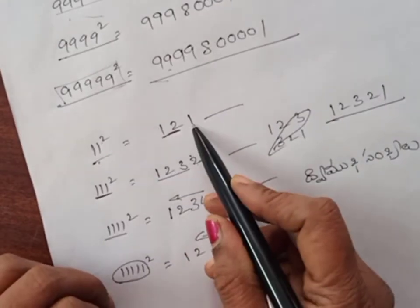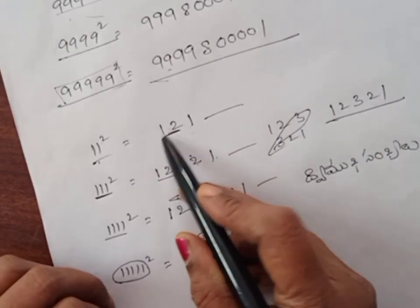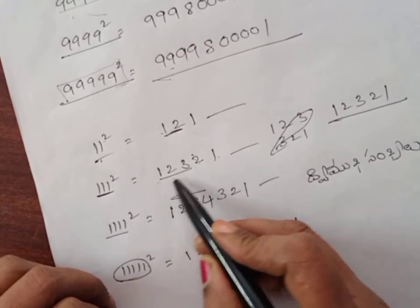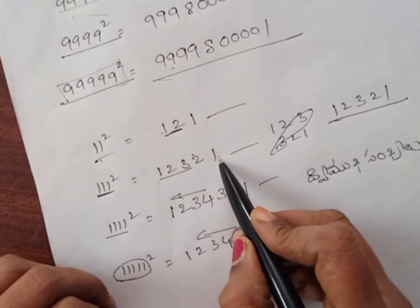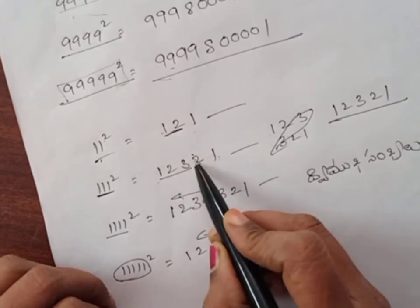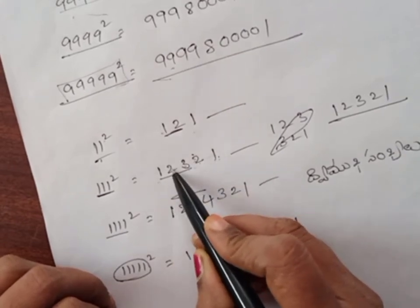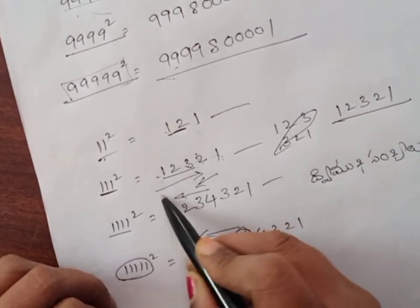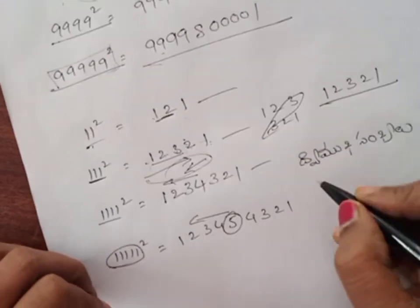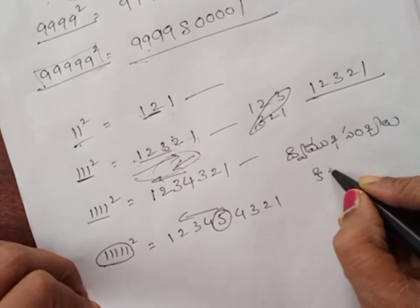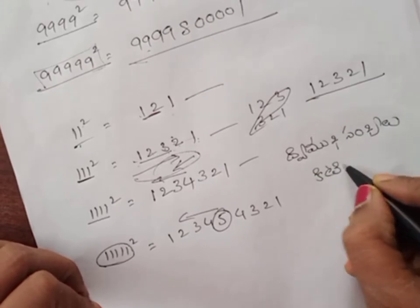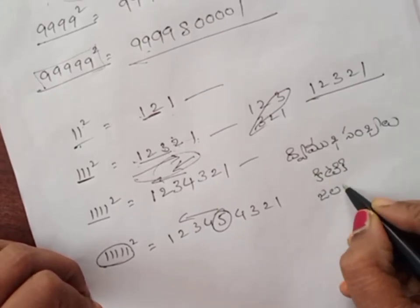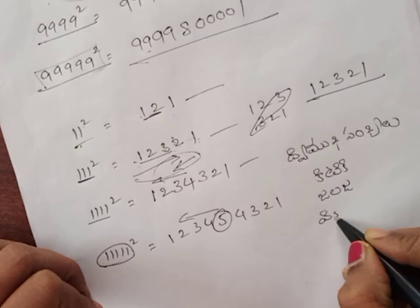1, 2, 3, 2, 1. 1, 3, 2, 1. 1, 2, 3, 1. 1, 2, 1. 1, 1, 1, 2, 1. 1, 1, 2, 1. 1, 2, 1, 2, 1.